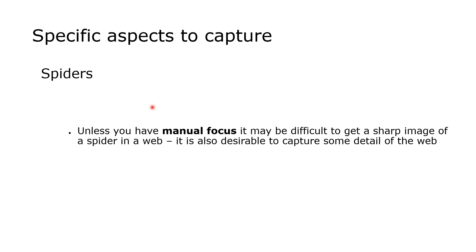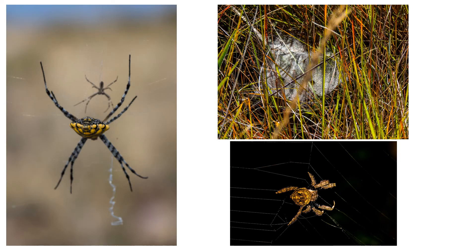For spiders, unless you have manual focus, you may find it very difficult to get a sharp image of a spider in a web. If it's on a hard surface it's much easier. It's also desirable to capture some detail of the web if you can, so manual focus is ideal. Here are a couple of shots that show the detail of the spider fairly clearly, and a nice shot of a web with the spider in it.